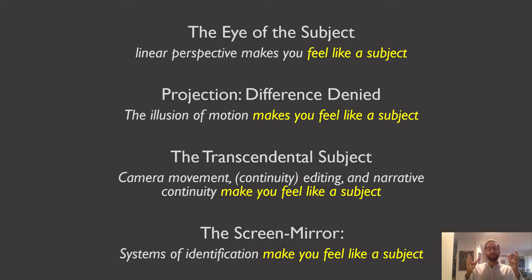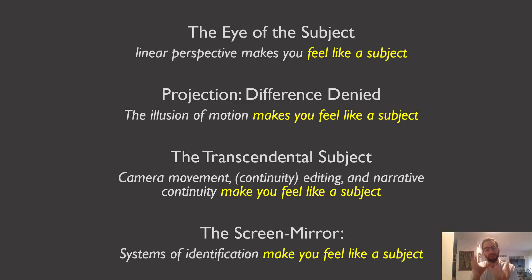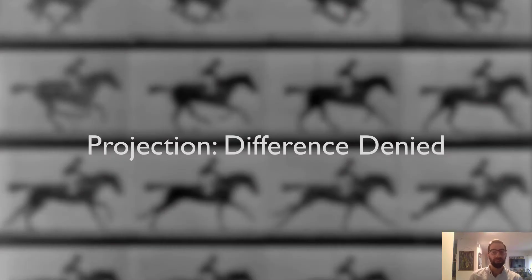...works to make the spectator feel like a subject — remember how we defined that word from the last video. All of these sections have to do with this idea of the subject. The first section says linear perspective makes you feel like a subject; the second says the illusion of motion makes you feel like a subject; the third says camera movement, continuity editing, and narrative continuity make you feel like a subject; and the fourth says systems of identification make you feel like a subject. They all work together to produce this illusion of the self-knowing subject.